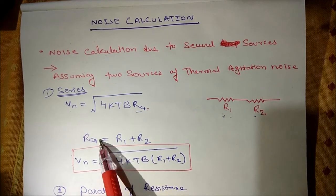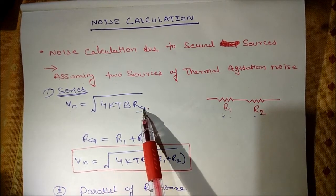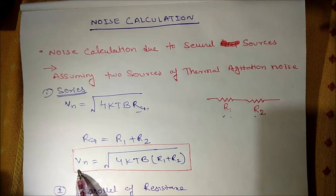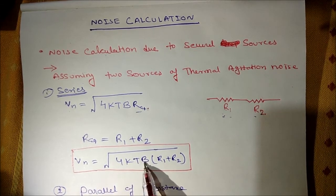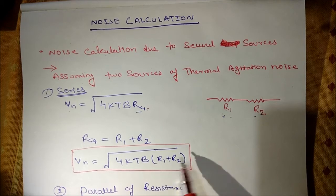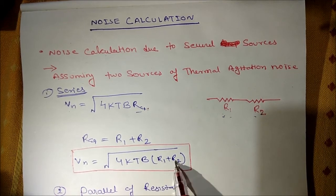If we replace this R equivalent in above equation then noise voltage is given as in the root of 4KTB and in place of R equivalent we will add R1 plus R2.